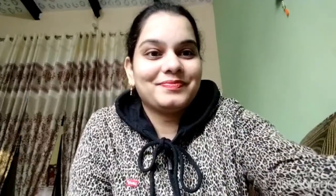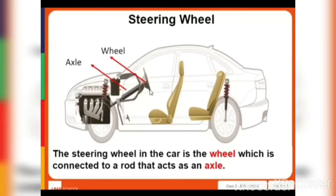Now I will show you the CRL — watch it carefully. In the picture you can see the steering wheel. The wheel is here and the wheel and axle is here. The steering wheel in the car is the wheel, which is connected to a rod that acts as an axle.